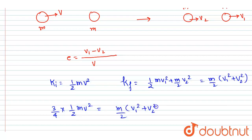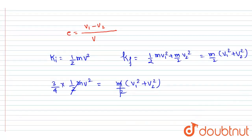v1 squared plus v2 squared. So this m by 2 will get cancelled out.